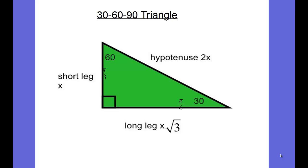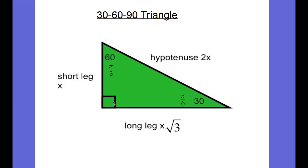Let's start with a 30-60-90 triangle from geometry. Pi over 6 is the same as 30 degrees, and pi over 3 is the same as 60 degrees. In this kind of triangle, the shorter leg — the side opposite the 30-degree angle — is always one-half the size of the hypotenuse. The long leg is the square root of 3 times the short leg. Those relationships really come from trigonometry, and now we're going to tie it all together.